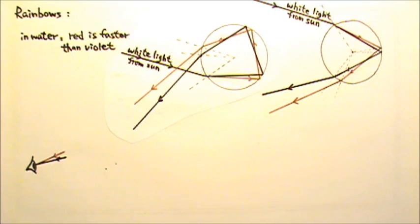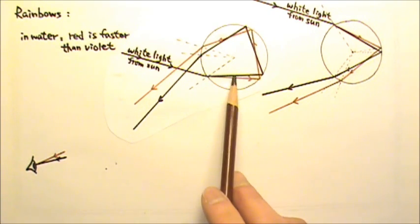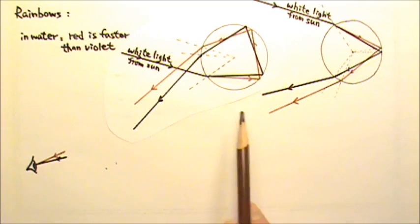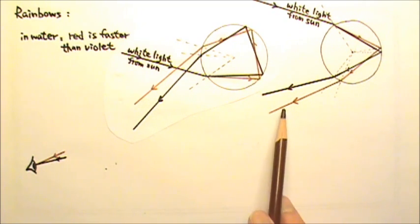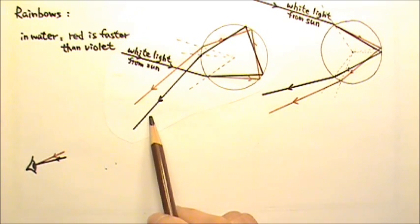Secondary rainbow is formed by white light entering a droplet like this, reflected twice before exiting the droplet. These rays would exit at a higher angle than the primary rainbows. That's why the faint secondary rainbow would appear above the primary one. Also the violet is at a steeper angle, so the violet is higher.